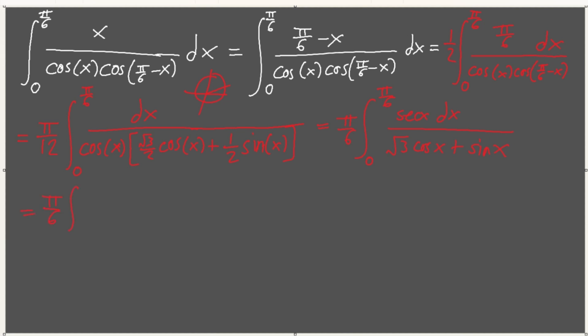Then we get, then 0 of pi over 6, secant square of x, and now we just have root 3 plus tangent of x dx. Aha, now this is just simple. This is very easy to do, right?